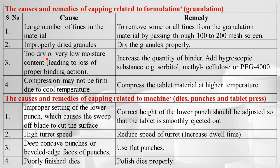If granules are too dry or have very low moisture content, leading to loss of proper binding action, we can increase the quantity of binder and add hygroscopic substances like sorbitol, methylcellulose, or polyethylene glycol 4000. If compression cannot be formed due to cool temperature, compress the tablet material at a higher temperature.